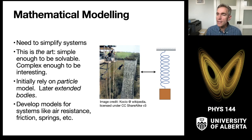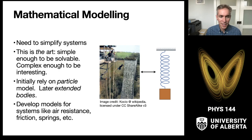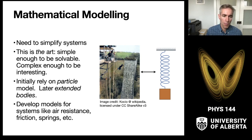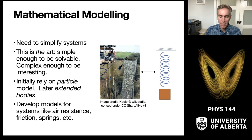This also means that we have to come up with mathematical models for things that make the world a little more complex. For example, we have things like air resistance, which we normally would love to ignore, but in a lot of cases we can't. So we're going to need to develop a way of mathematically representing air resistance, friction, springs, and other pieces that really require us to develop mathematics.